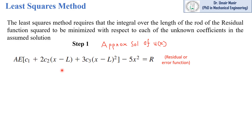The least square method is a type of weighted residual method, which was explained in the previous lecture 3.6. In that lecture, we assumed an approximate solution of axial displacement for a rod subjected to a triangular load distribution. From that point, we derived the residual function R, which has three unknown coefficients.